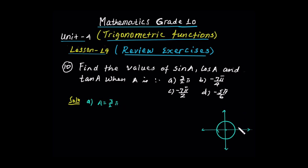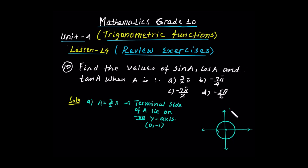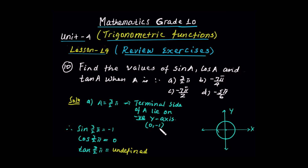This is the terminal side, going anticlockwise in the positive direction, landing on the negative y-axis. As A equals 3π/2, the coordinate point is (0, -1). With r equal to 1 on the unit circle, sine of 3π/2 is -1, cosine of 3π/2 — the x value — is 0, and tangent is y over x = -1 over 0, which is undefined.